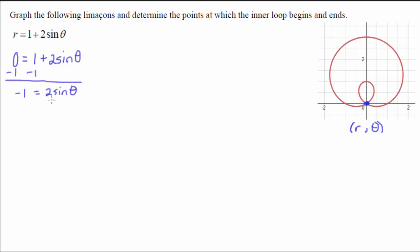And then divide by 2 on both sides and get negative 1 half equals sine theta. Now to solve at this point, what I'm trying to do is I'm trying to find the angles that give me a sine of negative 1 half.